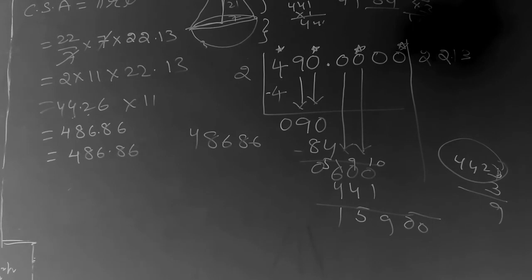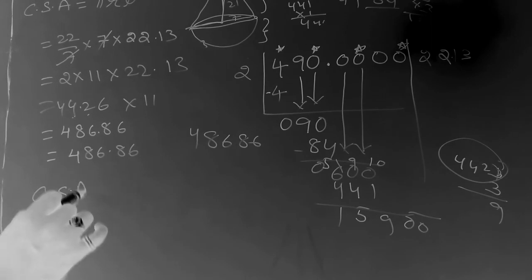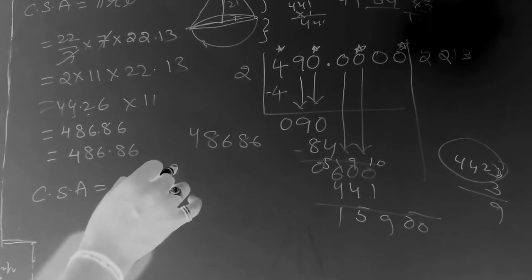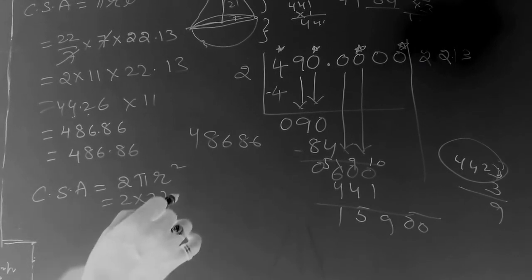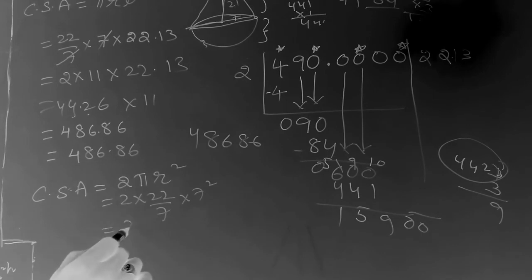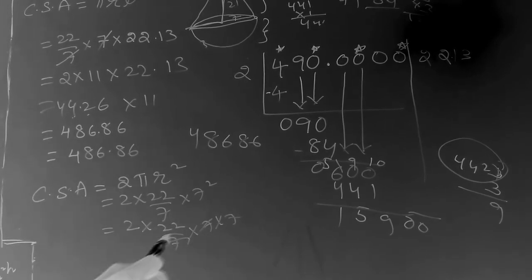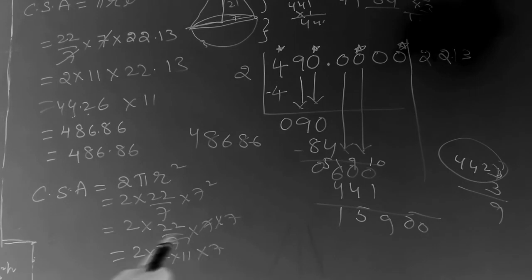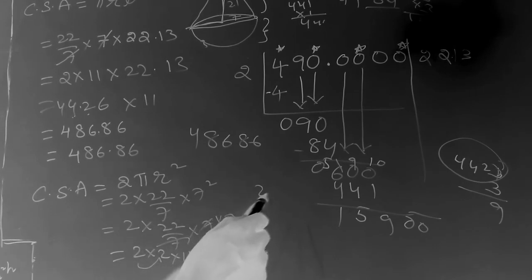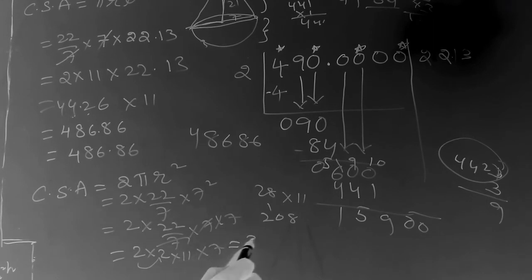Next, find the curved surface area of the hemisphere. The formula is CSA = 2πr². So CSA = 2 × (22/7) × 7² = 2 × (22/7) × 49. The 7 cancels, leaving 2 × 22 × 7 = 2 × 154 = 308. So the curved surface area of the hemisphere is 308 cm².